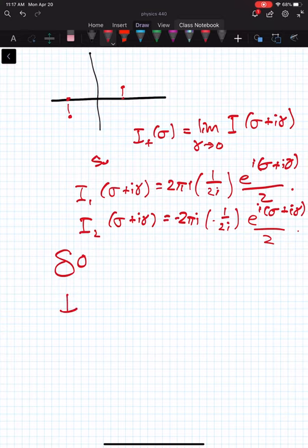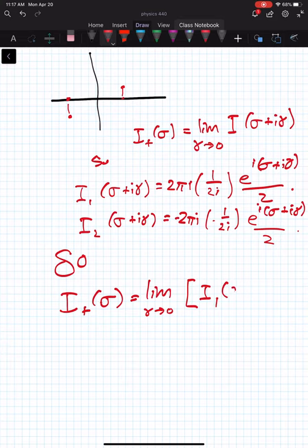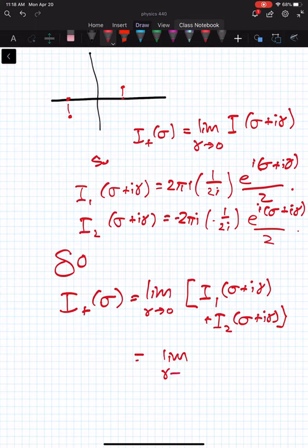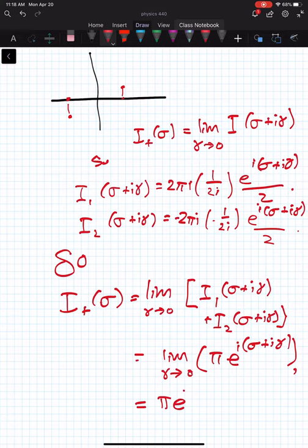And so we have for our outgoing wave, i sigma is equal to the limit as gamma goes to zero. So we start to bring that back down to the x-axis of i1 sigma plus i gamma plus i2 sigma plus i gamma. And that's equal to the limit of gamma goes to zero of pi e to the i sigma plus i gamma. And that equals pi e to the i sigma.